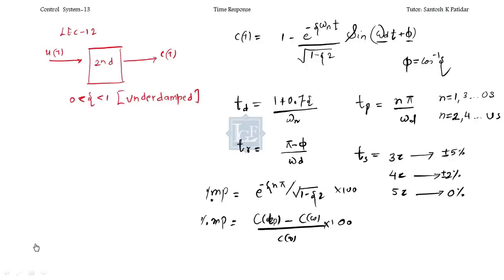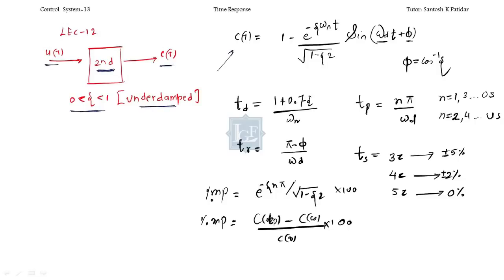Hi friends, welcome back to LJF. In the 12th lecture we discussed the second order system and applied unit step input. We got C(t) in the range of 0 to 1 for the under-damped system. Please try to remember this formula — it's very important. There will definitely be questions from this unit.